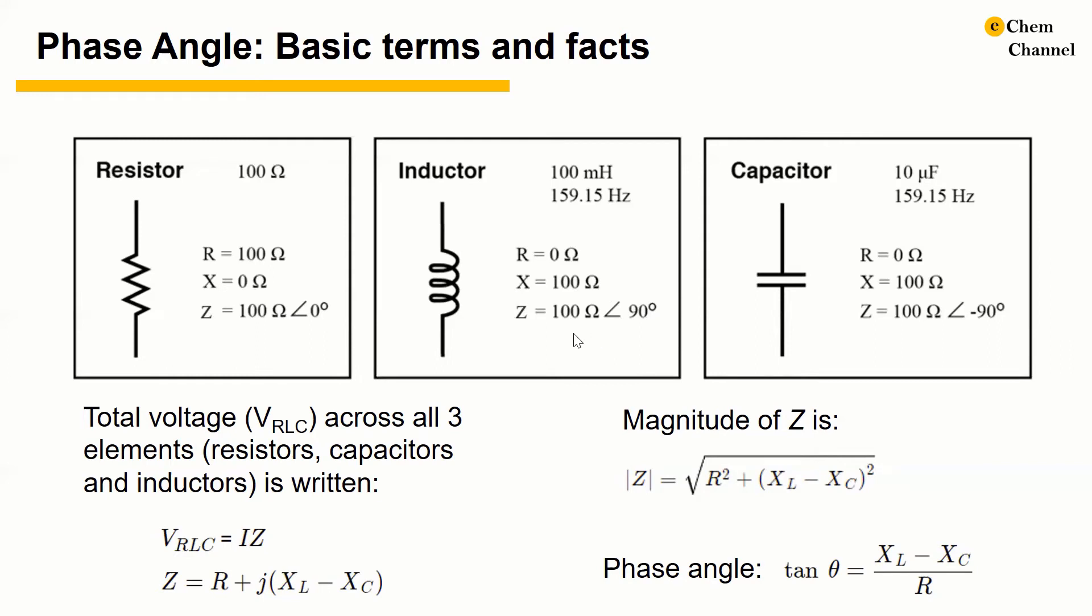For a perfect inductor, the voltage drop always leads current by 90 degrees. So the phase angle is 90 degrees.